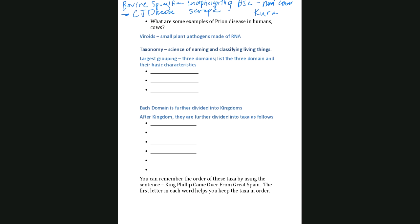For the test, you should know generally what a prion disease is and be able to recognize BSE and Creutzfeldt-Jakob disease. Viroids are just little pieces of RNA that become infectious — they're pathogenic but they target plants, not humans. Taxonomy is the science of naming and classifying living things. Starting with the largest division, all living things are divided into three domains: Eukarya, which are made of eukaryotic cells, Archaea, and Bacteria.